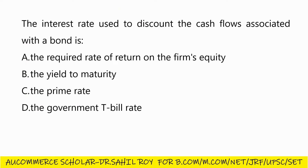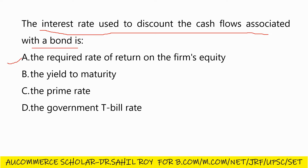Our next question: the interest rate used to discount the cash flows associated with a bond is — Option A: the required rate of return on the firm's equity; Option B: the yield to maturity; Option C: the prime rate; Option D: the government T-bill rate. The correct answer is the yield to maturity. Option B is the correct answer.